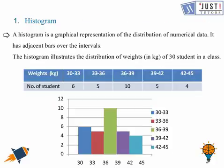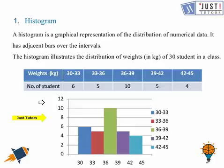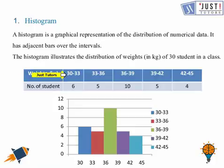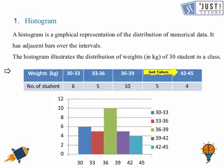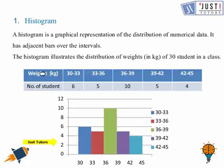A histogram also uses rectangular bars to represent its data, but here the difference is that the bars are adjacent to each other over a certain interval. This histogram represents the weight of 30 students in a class using class intervals: 30–33 kg, 33–36, 36–39, 39–42, and 42–45. These class intervals are always uniform. For example, six students have a weight between 30 to 33 kg, and so on.